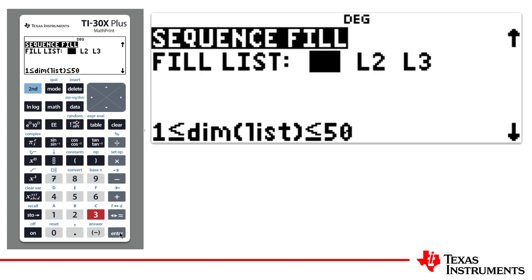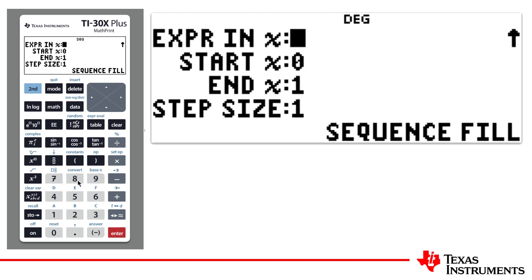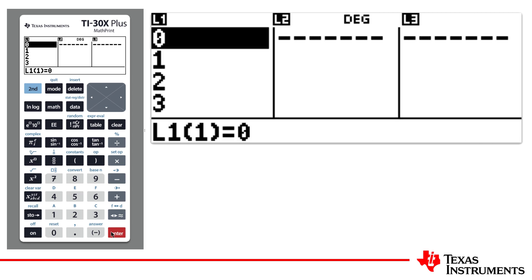Choose a destination for the sequence of numbers. And now I'll create a formula. I'll use x as the formula, starting at 0, ending in 10, with a step size of 1. That generates the numbers from 0 to 10 into list 1.